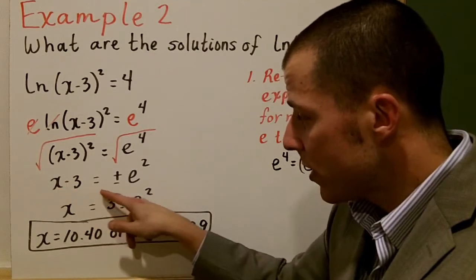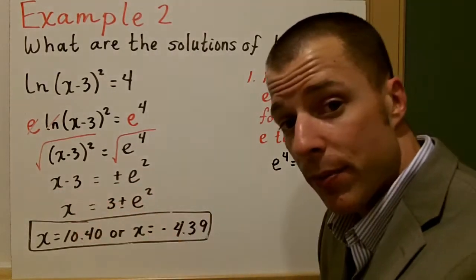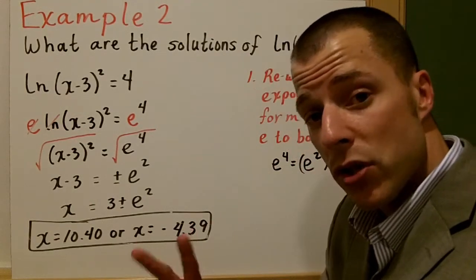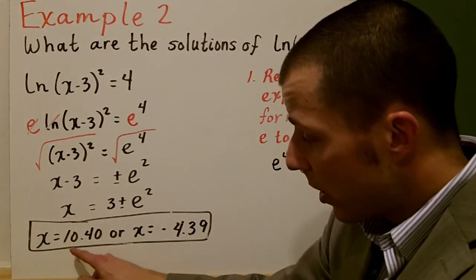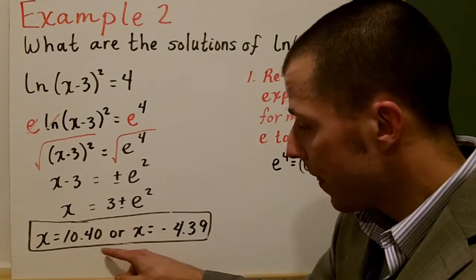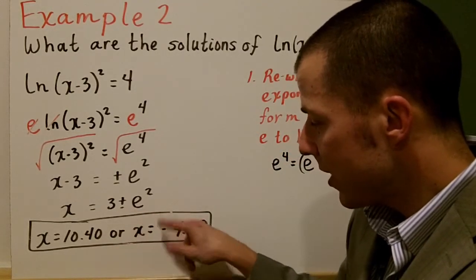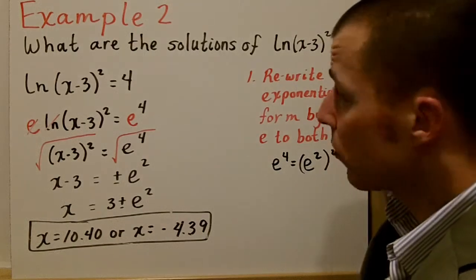So you have x minus 3 is equal to plus or minus e squared. To solve for x, you simply add 3 to both sides, but you have two solutions: 3 plus e squared and 3 minus e squared. There's 3 plus e squared, it's approximately 10.39. And 3 minus e squared is about negative 4.39.